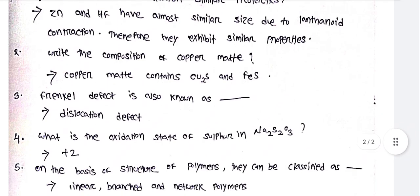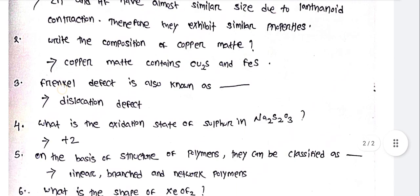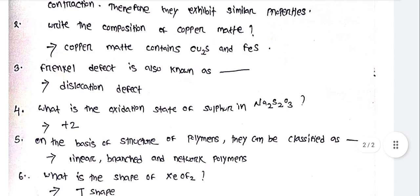Write the composition of copper matte. Copper matte contains Cu₂S and FeS. Frenkel defect is also known as dislocation defect.